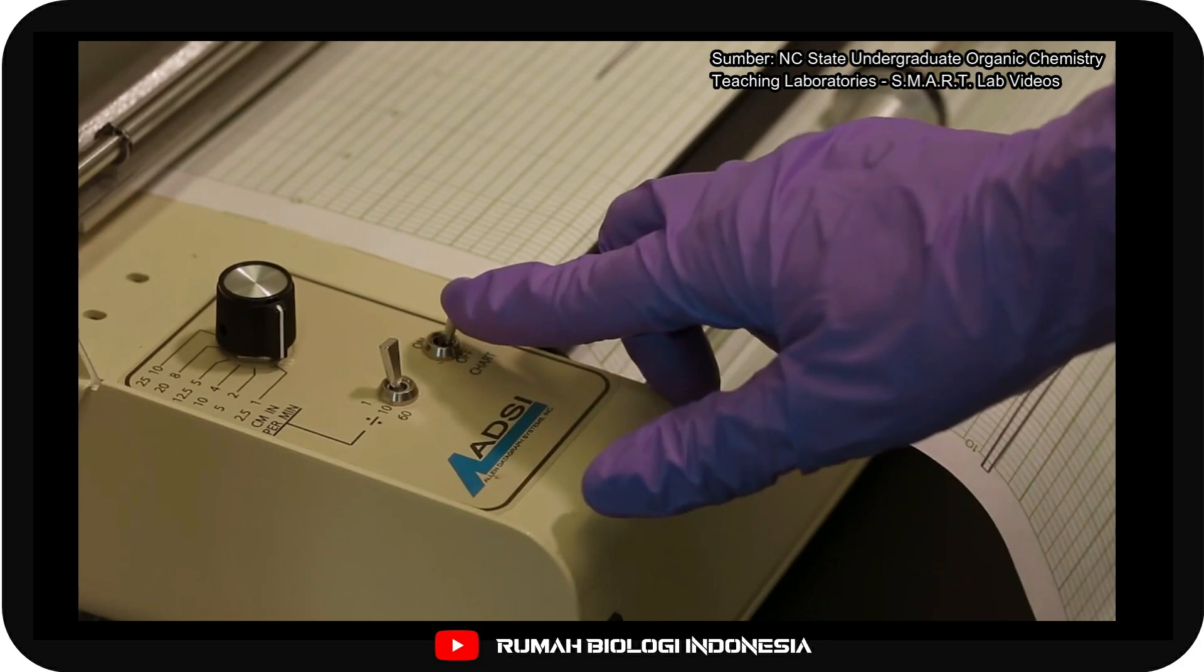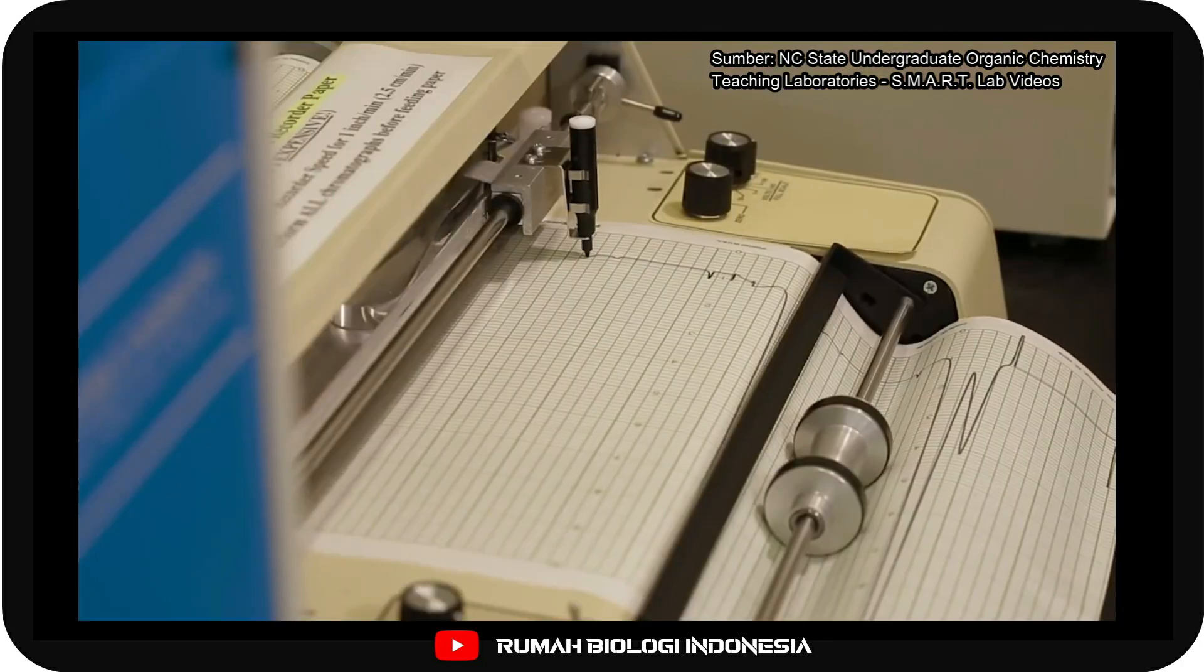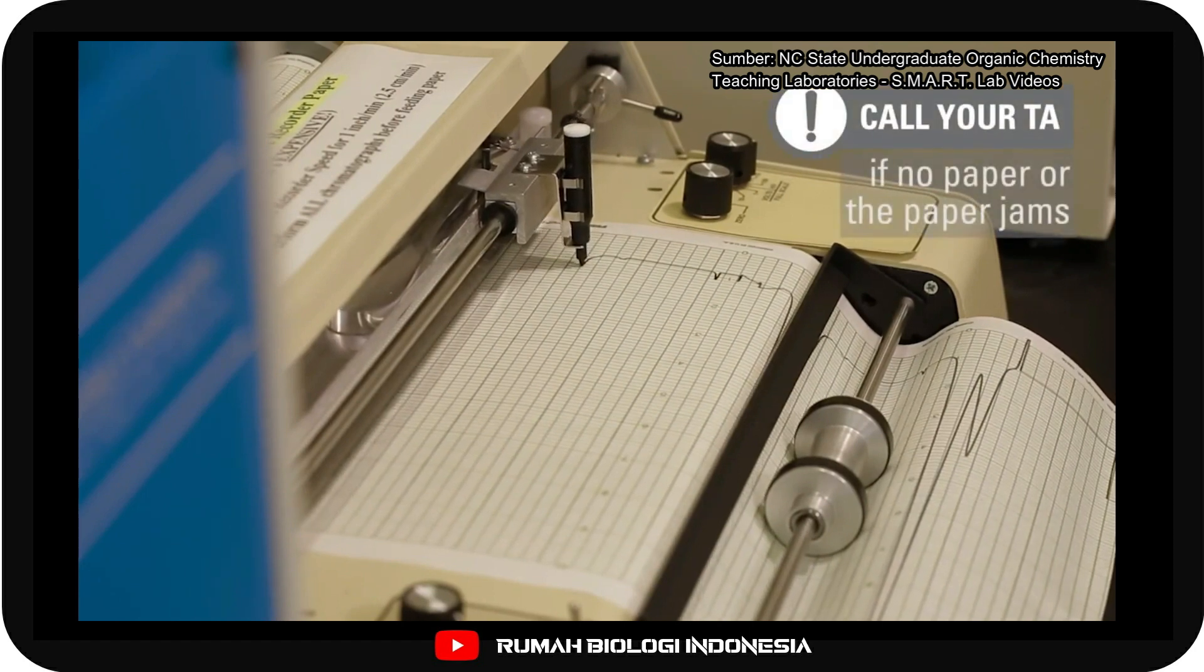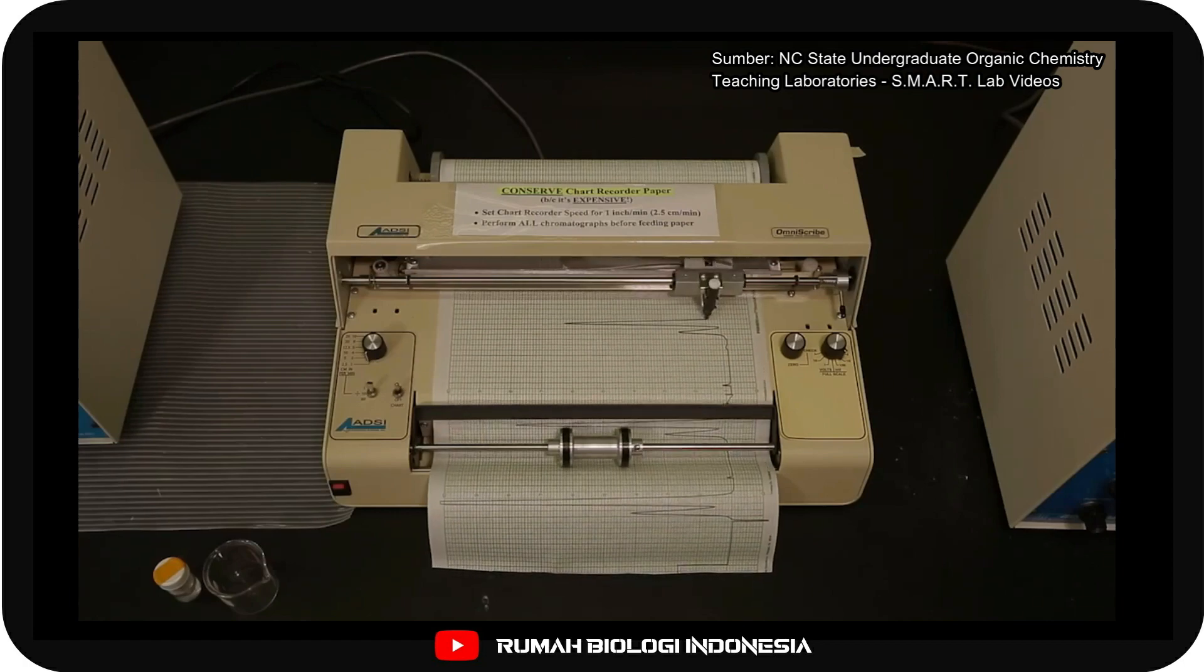At the same time you inject the sample, turn on the chart recorder. Make sure it is recording by checking the chart paper feed. If there is no paper or the paper jams, contact the TA for assistance. Wait until the entire sample has run through the column.